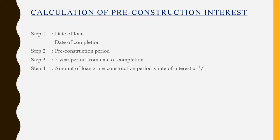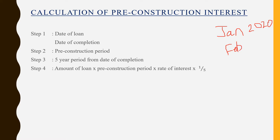Pre-construction period is the period during which the property was under construction. For example, the individual has started to construct his property on Jan 2020 and the property was completed on Feb 2021. So here the pre-construction period is one year, one month.